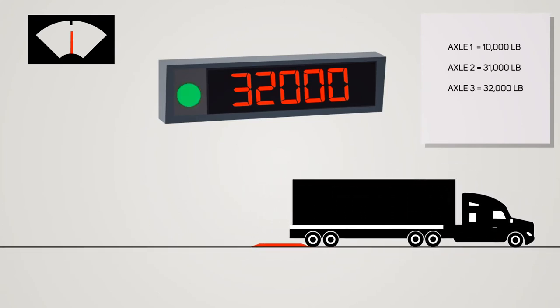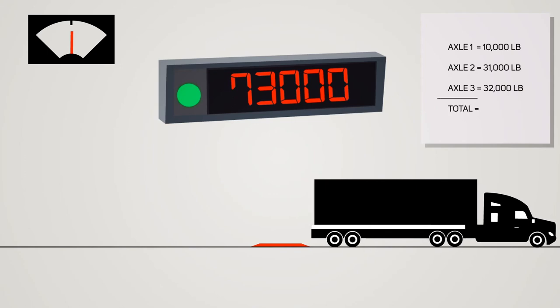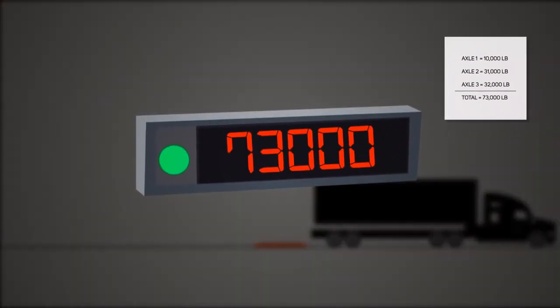After the last weighment, the truck is driven off the scale entirely and the scoreboard displays the total weight. The scale indicator records all axle weights and adds them together.